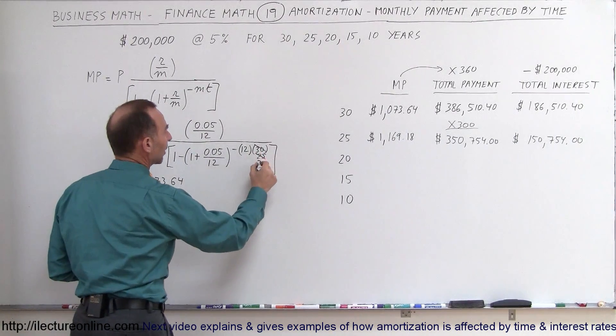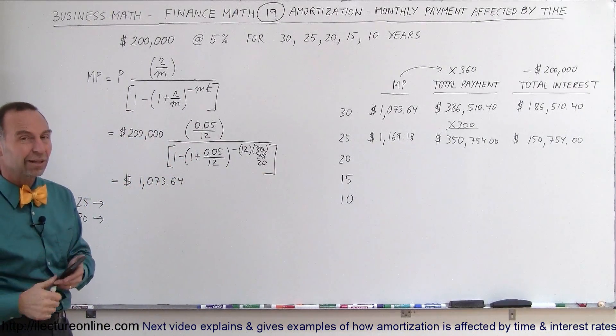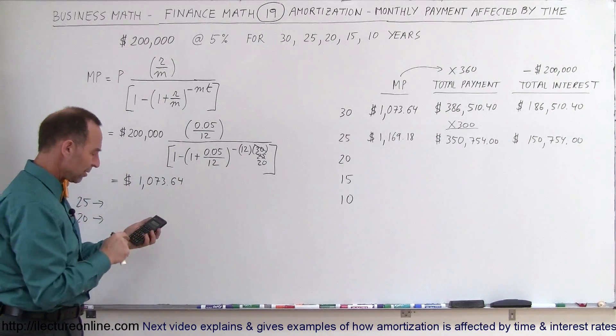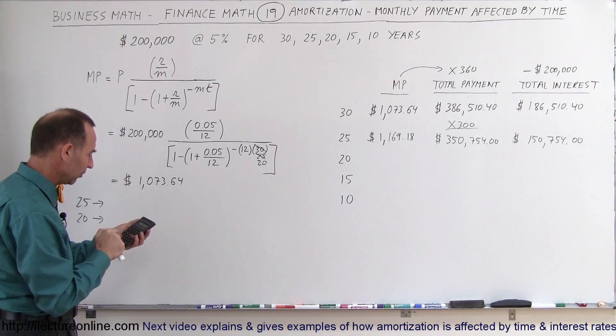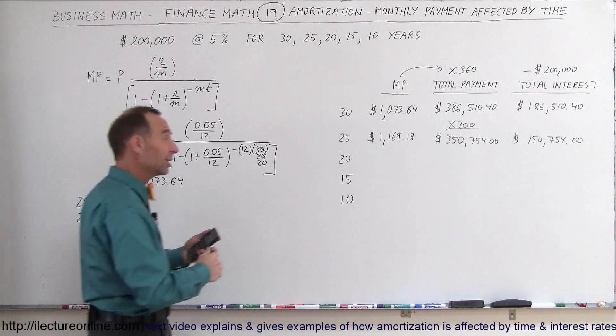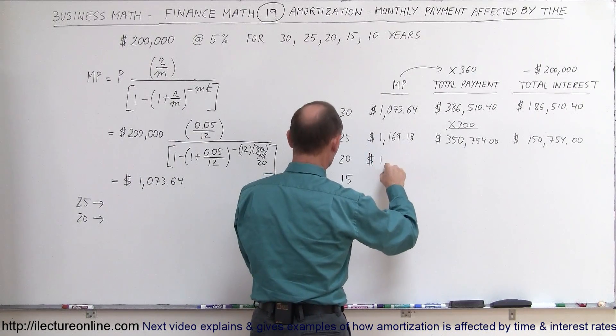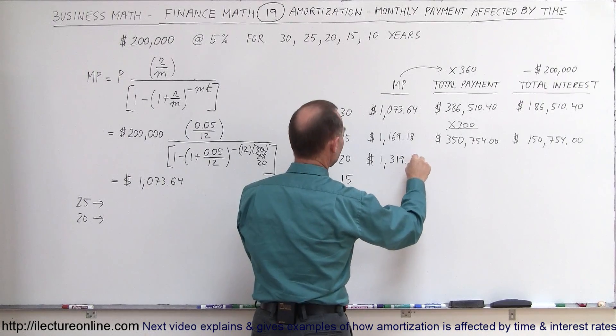For the 20-year loan, this now becomes a 20 instead of a 30. There now will only be 240 payments. Let's see what your monthly payment is now. Again, starting from here, 0.05 divided by 12 and times 200,000. So now your monthly payments are getting quite steep. For 20 years, you now will be paying $1,319.91.